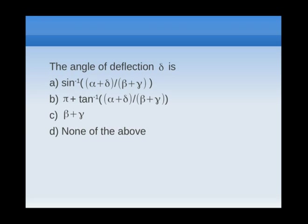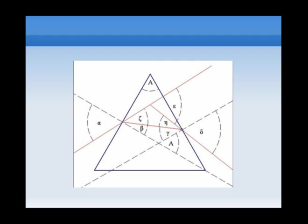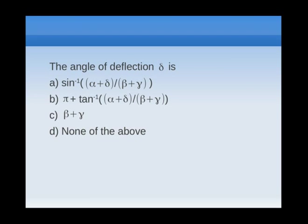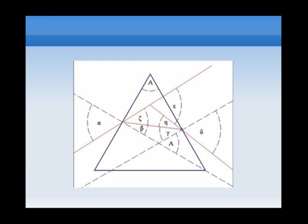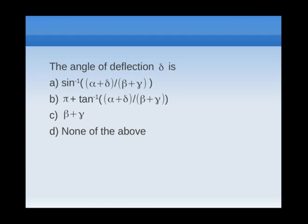Looking at option A, we can see that it's sin inverse of (α+δ)/(β+γ). Now, if you refer back to the original diagram, we can tell that (α+δ)/(β+γ) is actually more than one, which is invalid. We cannot have a sin inverse of a number which is more than one. So that eliminates option A.